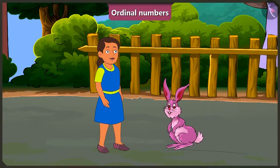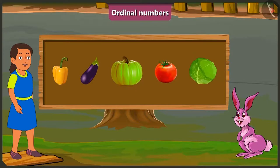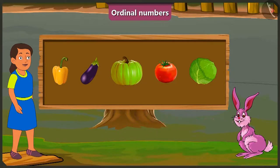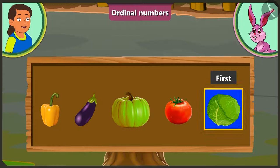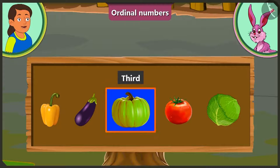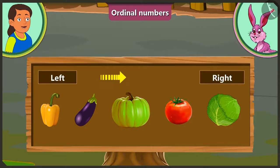Let us see a few more examples. Look Bubbly, there are some vegetables kept in a row. Which vegetable is at the fourth position? First of all is cabbage, at the second position is tomato, at the third position is pumpkin, and at the fourth position is brinjal.